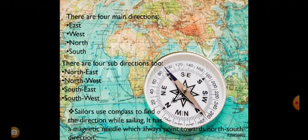There are four main directions. The four main directions are East, West, North, and South. There are also four sub-directions: North-East, North-West, South-East, and South-West. You can see the compass.